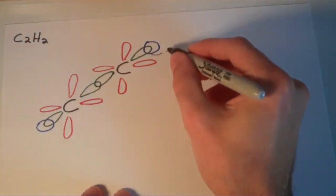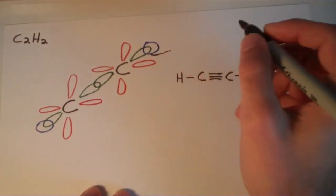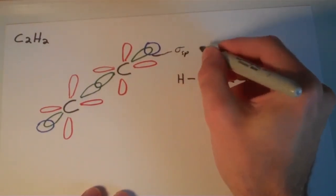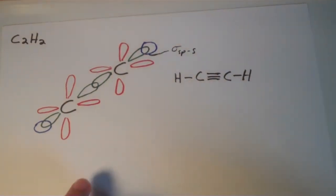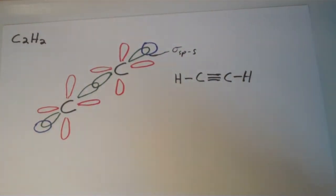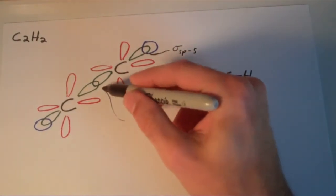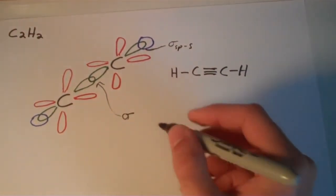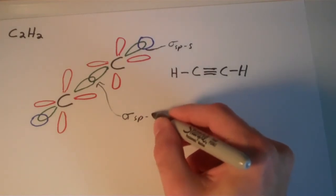Let me go ahead and write all this down. We have this, which is a sigma bond between an sp orbital and an s orbital. This thing in here is a sigma bond between an sp and another sp.